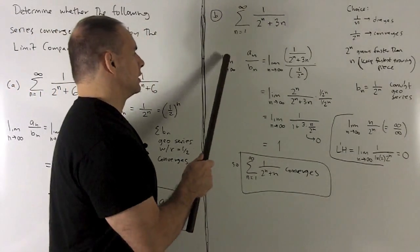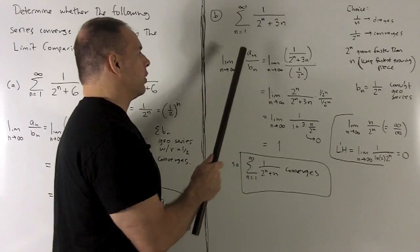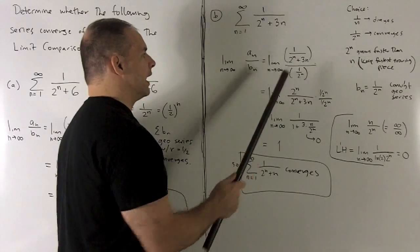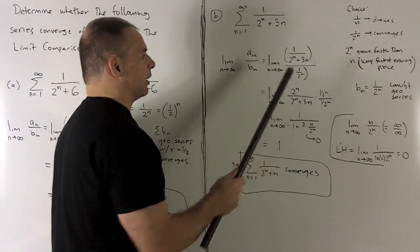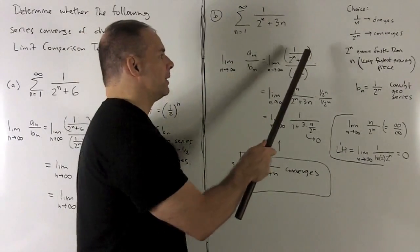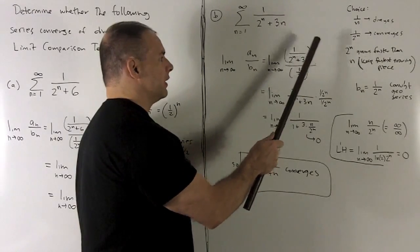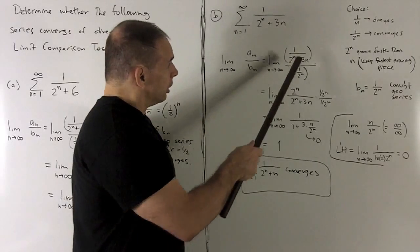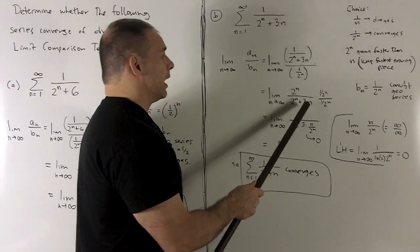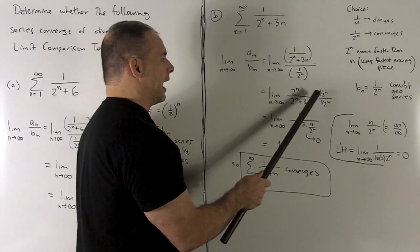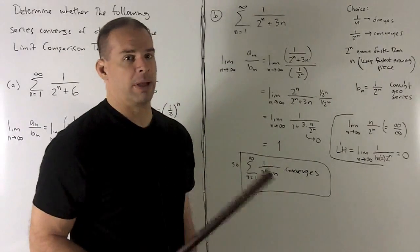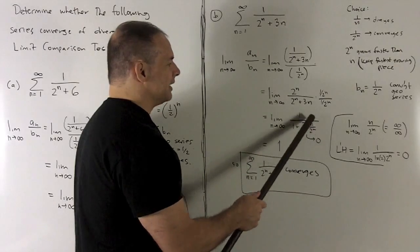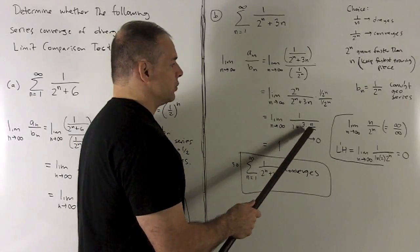Let's take a look. Take a limit, n goes to infinity of a_n over b_n. I get my 1 over 2^n plus 3n, 1 over 2 to the n, and I clear my denominator out. Using the same trick as before, I'll multiply the top and bottom by 2 to the n times 2 to the n plus 3n. It's going to get me down to here, and I'm going to clean this up again by dividing top and bottom by 2 to the n. Get a 1 here, a 1 here, and then I've got to deal with n over 2 to the n.